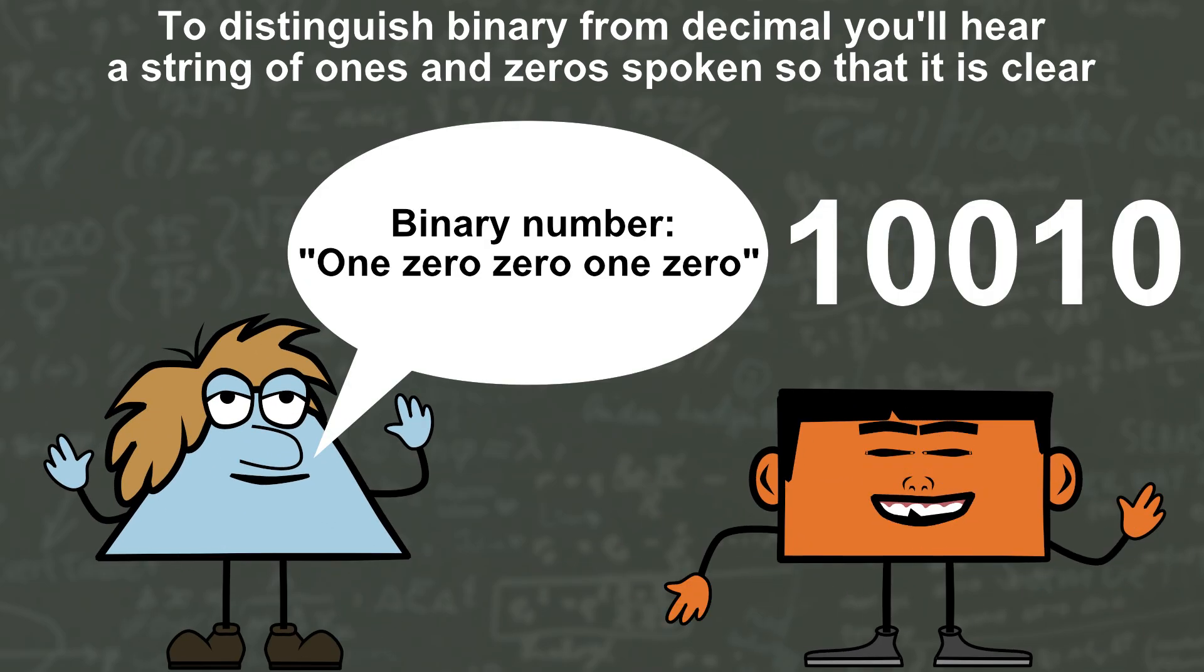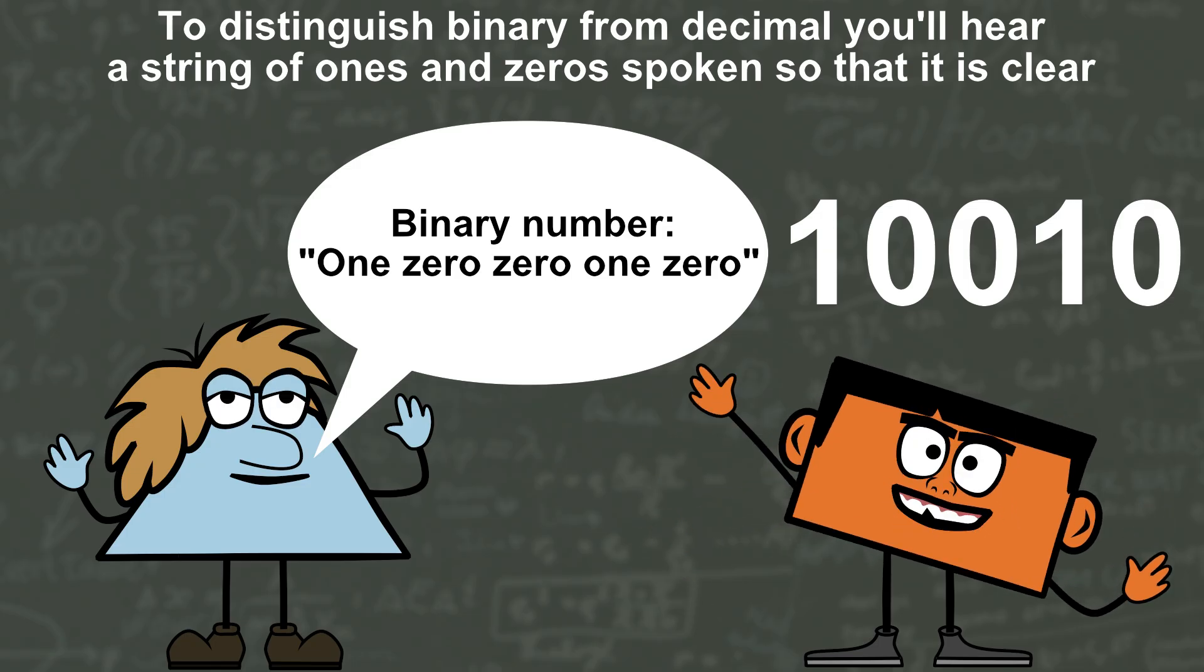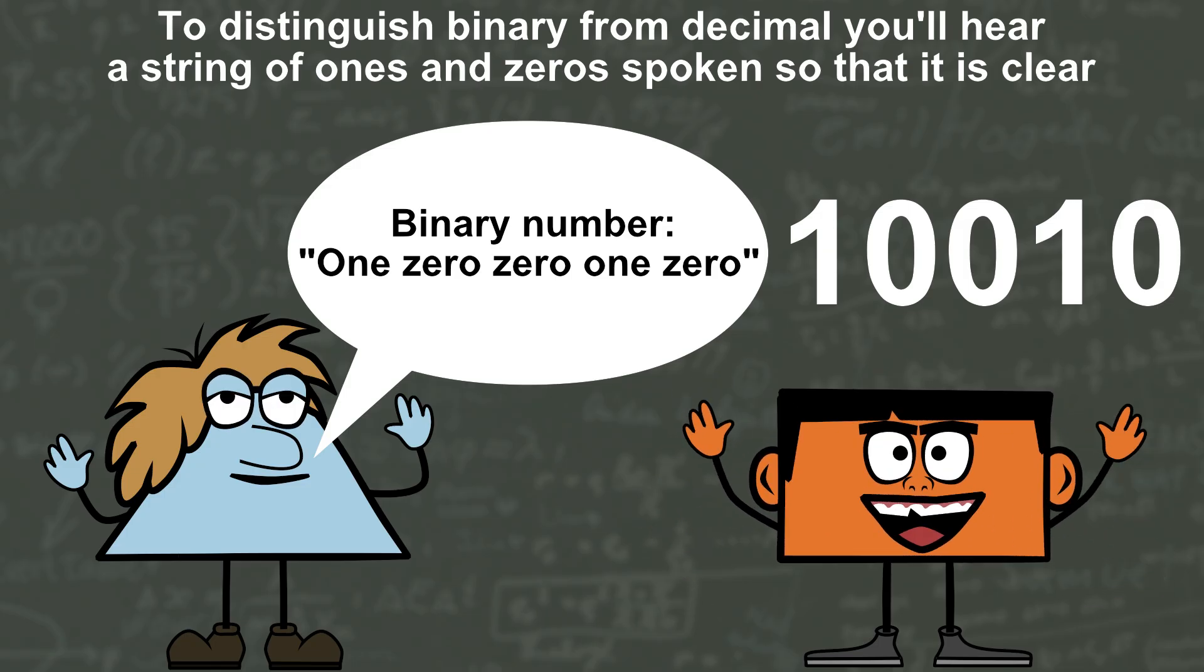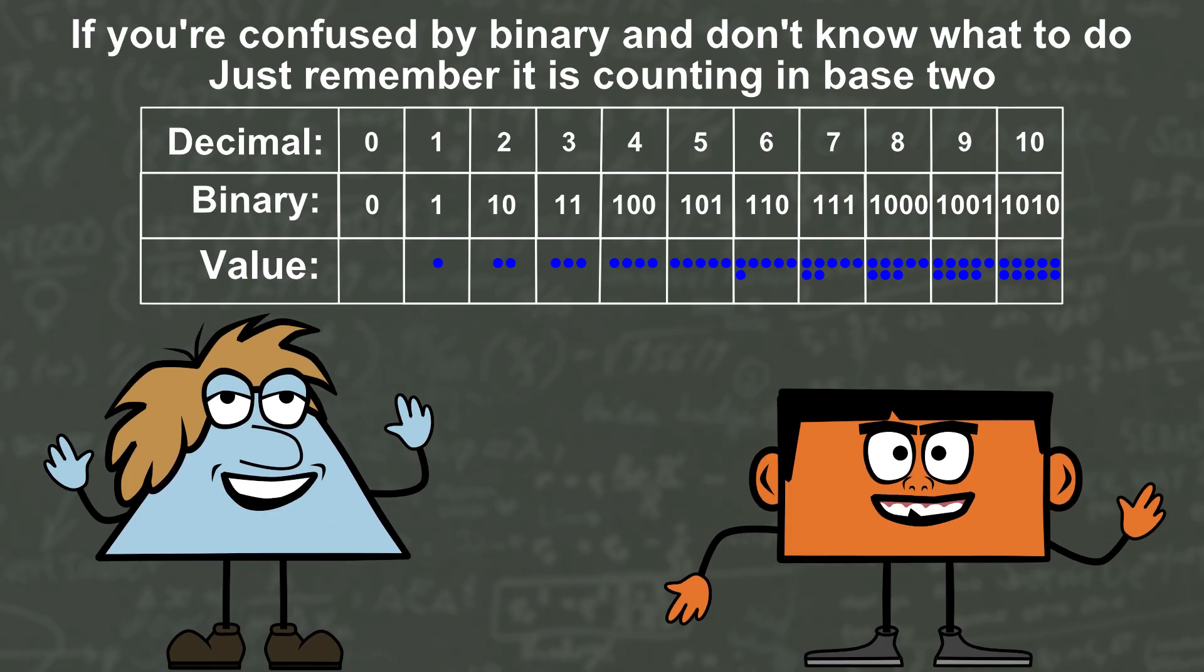To distinguish binary from decimal you'll hear a string of ones and zeros spoken so that it is clear. If you're confused by binary and don't know what to do, just remember it is counting in base 2.